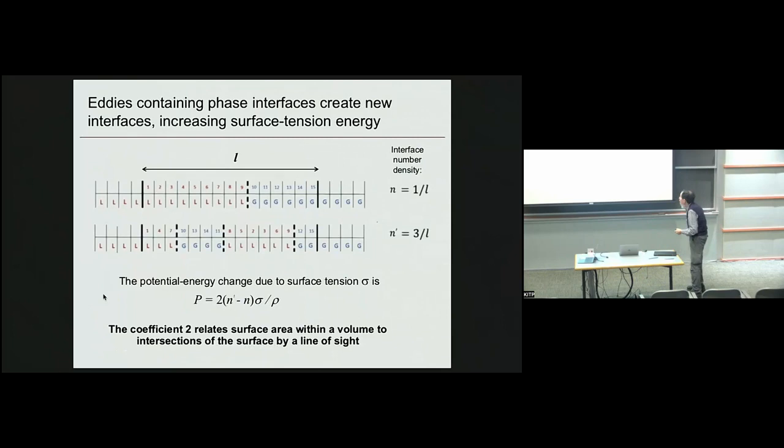Now we're doing surface tension. We have, before the map, we're going to do this map, and here, liquid, gas, and you do the map, and now you have liquid gas, liquid gas. You've generated new interface in 1D, and so then you can determine the potential energy change as a result. By assuming isotropy, you can relate these points on a line to the area volume ratio that would occur in 3D.